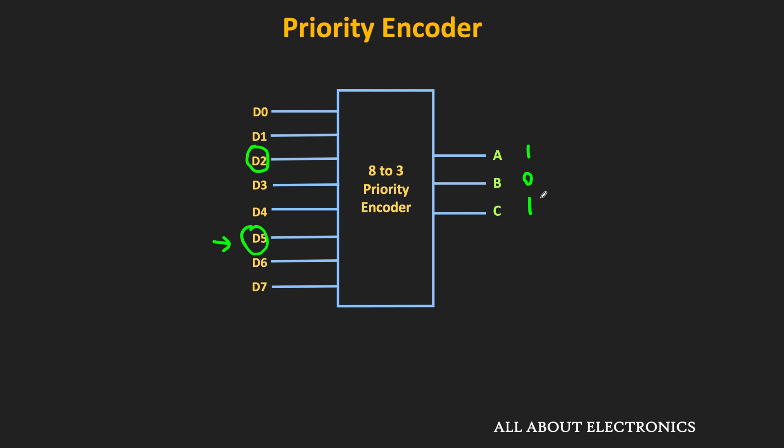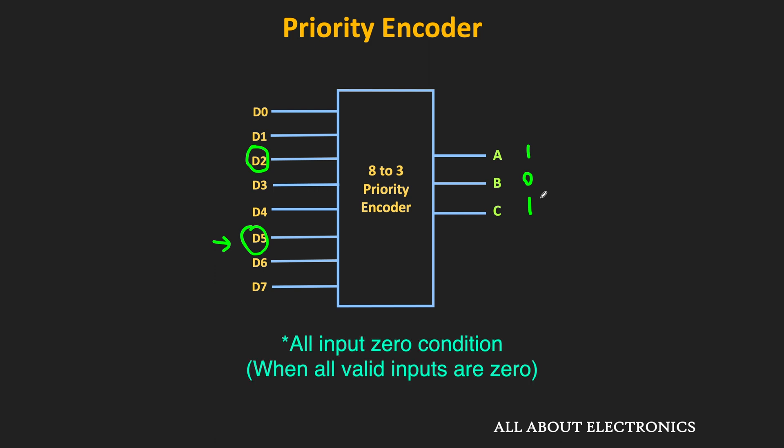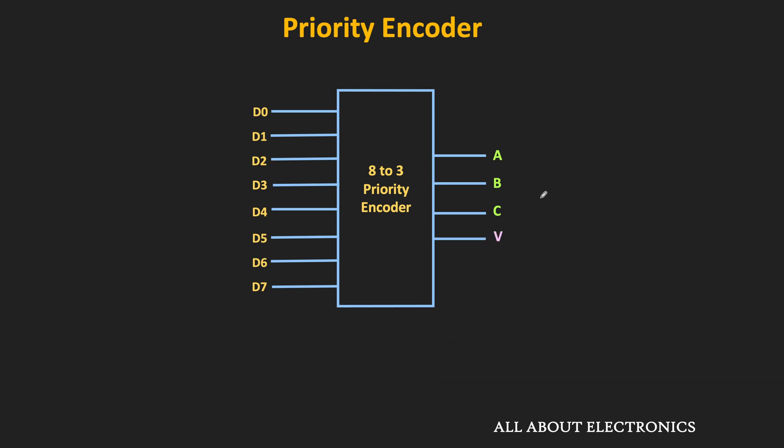Additionally, to handle the all-zero input condition, the priority encoder can also have an output V. When all inputs are 0, V equals 0. When one or more inputs are high, V equals high. In this way, the priority encoder eliminates both limitations of the normal encoder. That is a brief introduction to the priority encoder.